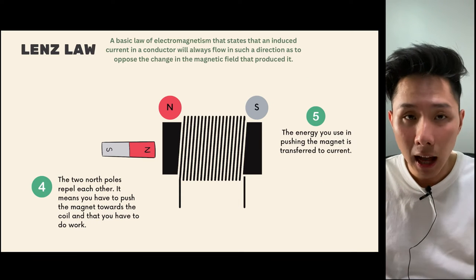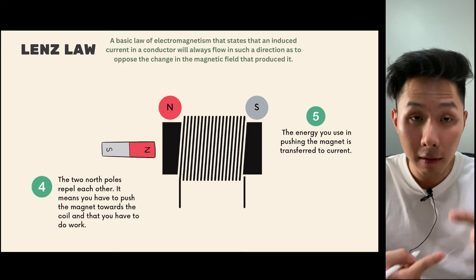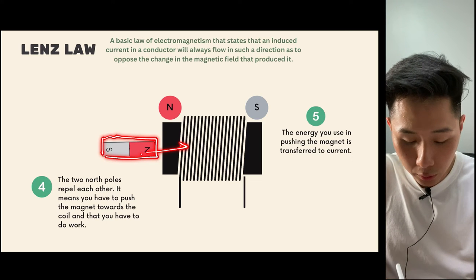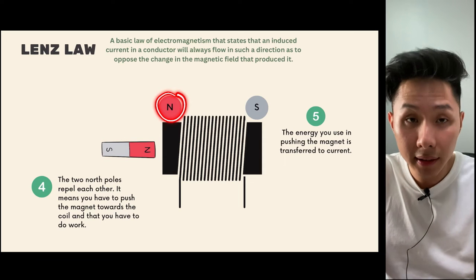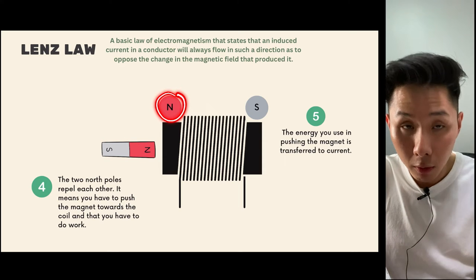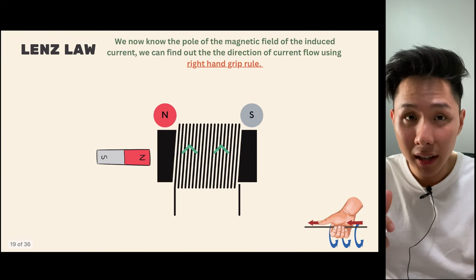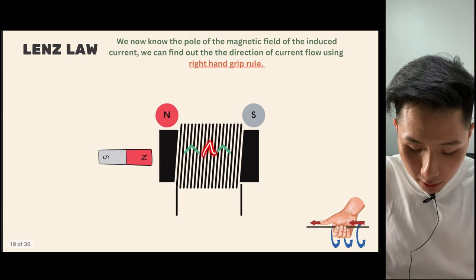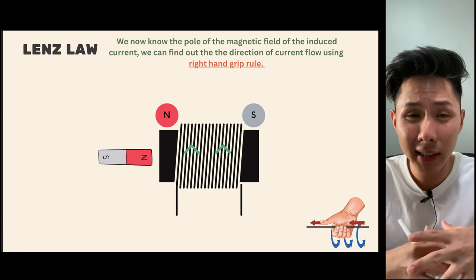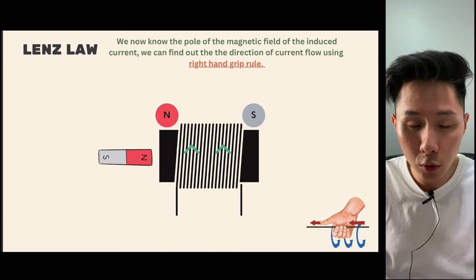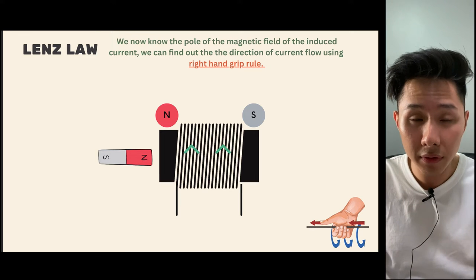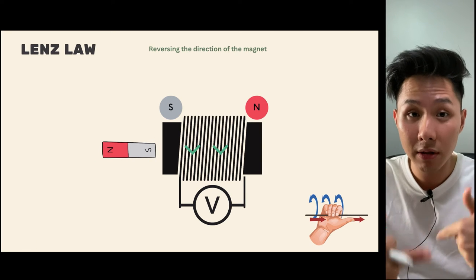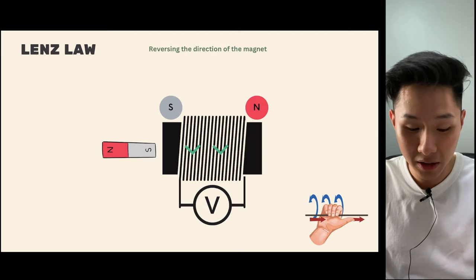By knowing how Lenz's law works, you can identify the direction in which the current is flowing. If you insert the magnet facing the north pole into the coil, you know that part of the coil will become a north pole. Using the right-hand grip rule, you can then figure out the direction of the current generated. If you reverse the magnet pole, the direction of the current reverses too.